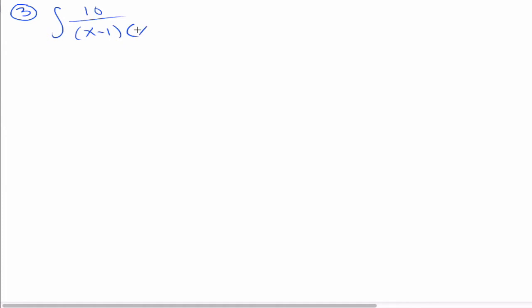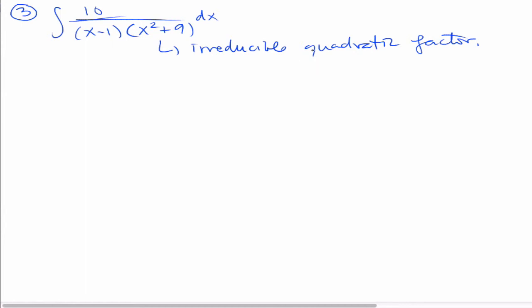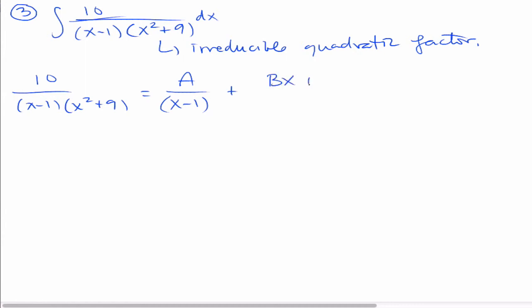The third type of rational expression you will see in integration problems has an irreducible quadratic factor — that's a degree 2 factor that changes the partial fraction decomposition. So 10 over x minus 1 times x squared plus 9 will split into an unknown a over the linear term, but for the quadratic term you simply put a linear unknown bx plus c over the irreducible quadratic. Writing it this way guarantees this equation will have solutions a, b, and c. Let's find out what these a, b, and c are by clearing the denominators.